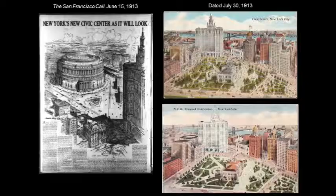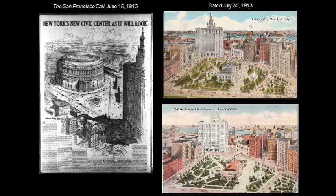Of course, it is complete fiction. The Tweed Courthouse was never torn down. At the time of this mailing — 1913 — the post office was still there at the tip. On the left, I show this from the San Francisco Call — the idea of national publicity around this project, and a kind of artist's conception of what the round building might have looked like, anchoring a kind of civic precinct north of City Hall.